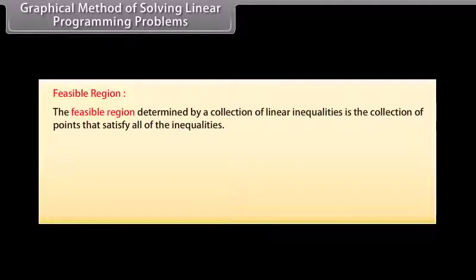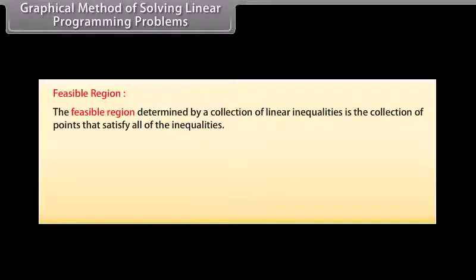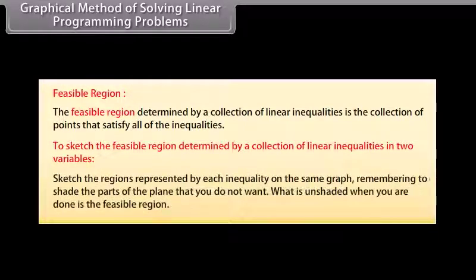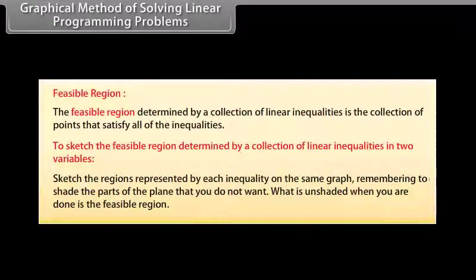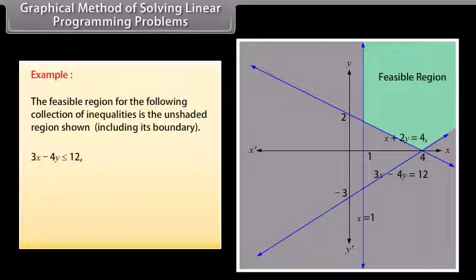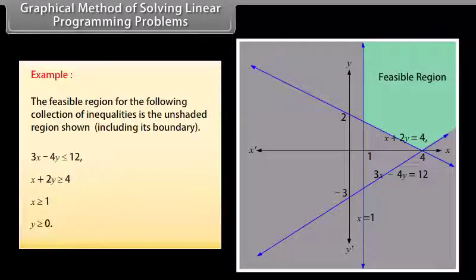Graphical method of solving linear programming problems. Feasible region: The feasible region determined by a collection of linear inequalities is the collection of points that satisfy all the inequalities. To sketch the feasible region, sketch the regions represented by each inequality on the same graph, shading the parts of the plane that you do not want. What is unshaded when you are done is the feasible region. Example: The feasible region for the inequalities 3X minus 4Y ≤ 12; X plus 2Y ≥ 4; X ≥ 1; Y ≥ 0 is the unshaded region shown, including its boundary.